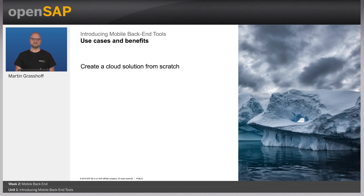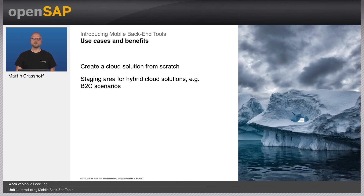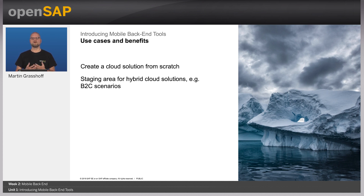The mobile backend tools are a great tool to build your backend if you're starting your mobile solution from scratch, meaning you don't have any backend yet. But there are other use cases as well. For instance, you can use it as a staging area where you copy data from your business systems into the backend system on Cloud Platform and serve it from there, so that the end user will not directly tap into the backend system. This offloads your backend system, and traffic will not go directly to it — this is often used in B2C scenarios.